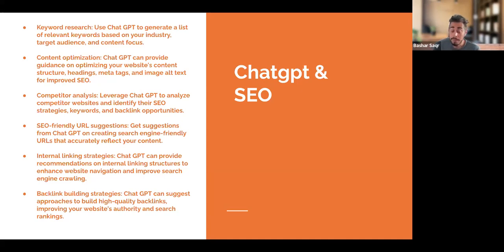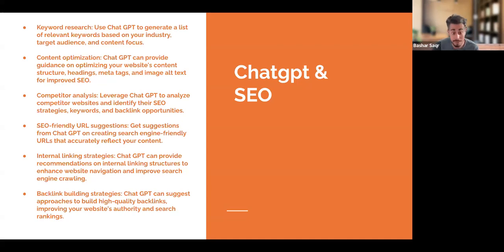And lastly, one of the main components of SEO is off-page SEO, which is one of the most important pillars of SEO itself. The main component of off-page SEO is backlinking. ChatGPT can suggest different approaches to build high-quality backlinks, which will improve our website's overall authority and search rankings.